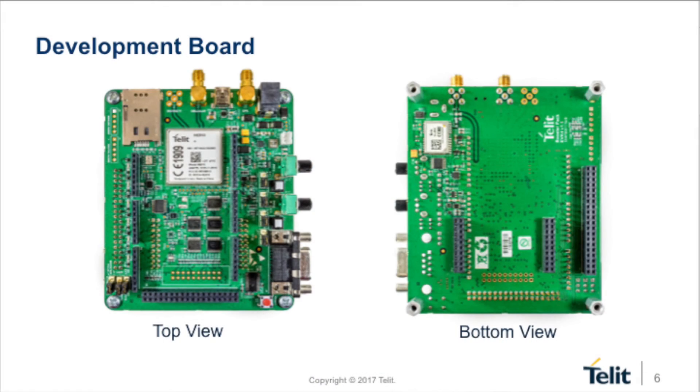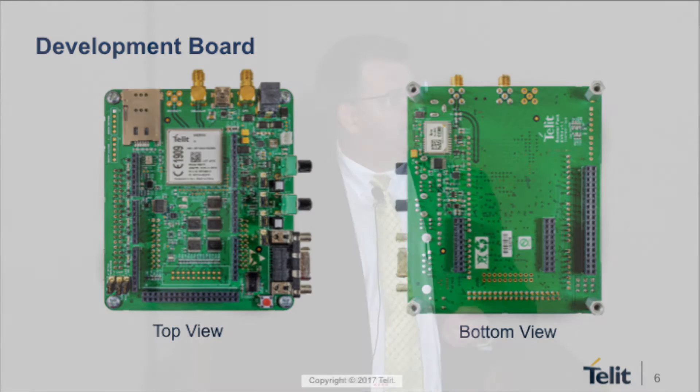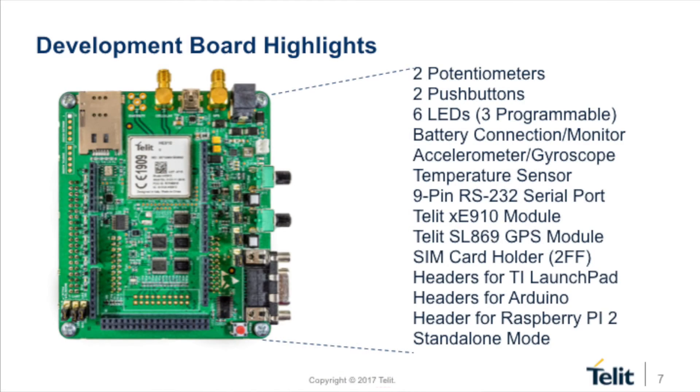We've got a top view and a bottom view here. We take advantage of TELIT componentry on board for cellular as well as for GPS, so you have high accuracy GPS capability. And then you'll notice the different headers — those are there for the different types of board configurations that you might be working with. Here are some of the capabilities that are built into the board.